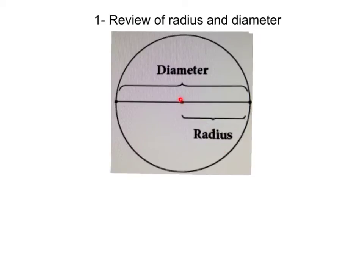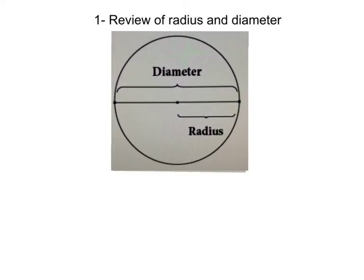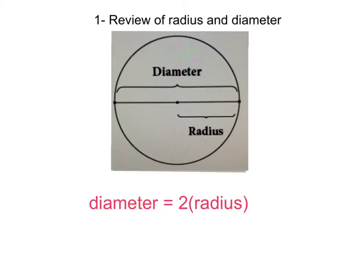If you only start from the center and go to an outside point, no matter which direction, that is the radius. We also want to remember that because a radius is half of the diameter, two radii equal one diameter. We can write that as an equation: diameter is equal to two times the radius, or using variables, d is equal to two times r.